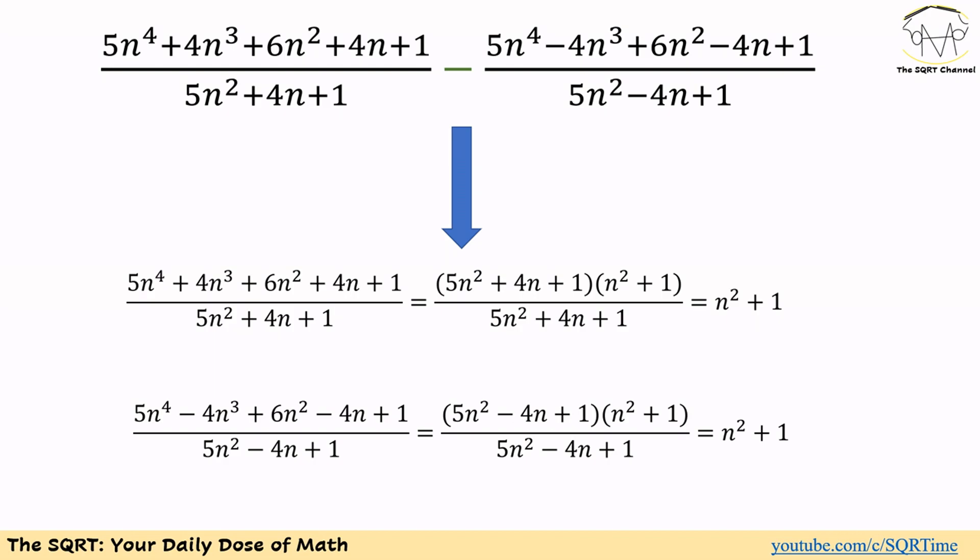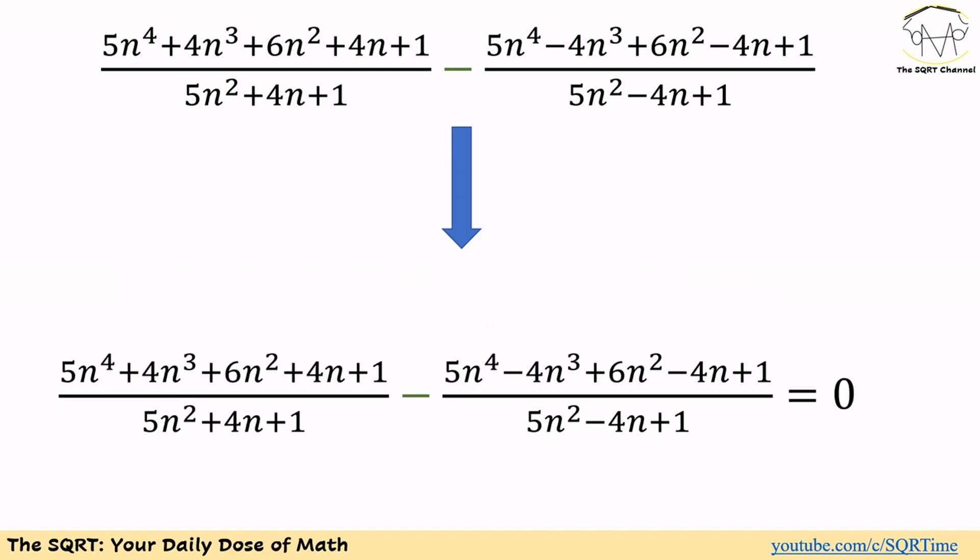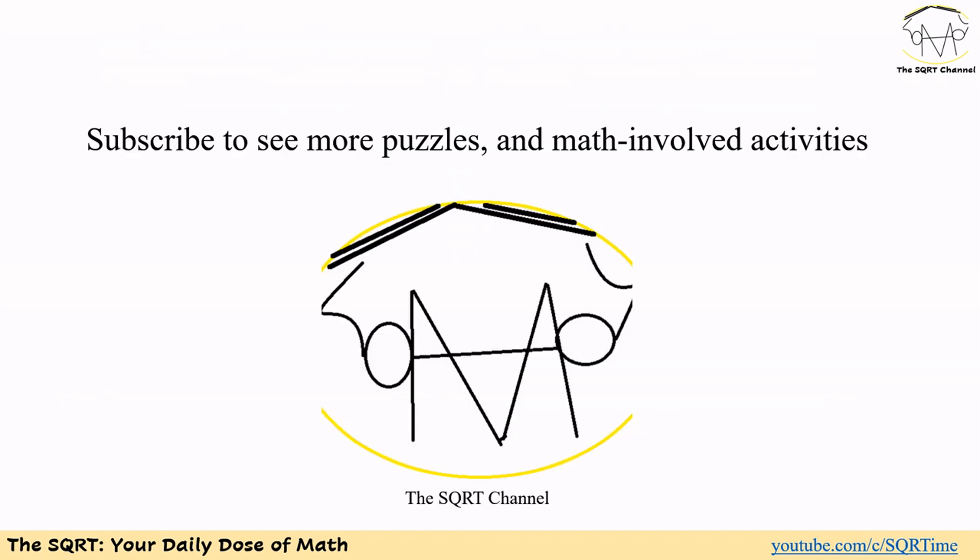Obviously we have N² plus 1 for the first term and N² plus 1 for the second term. So at the end we will have (N² + 1) minus (N² + 1), and we will have 0 for the whole expression. That's our final answer. Thanks for watching the video. If you would like to see more puzzle and math-involved activities, please subscribe to the SQRT channel.